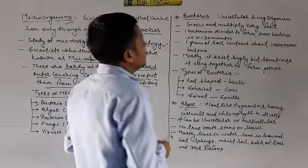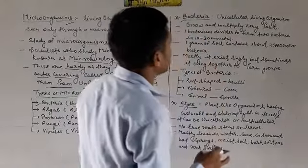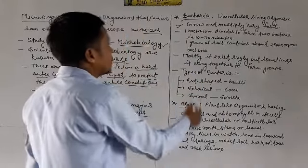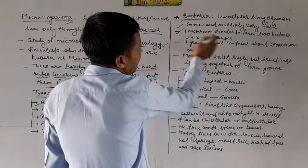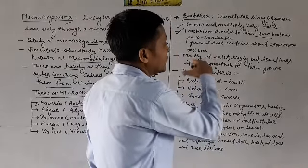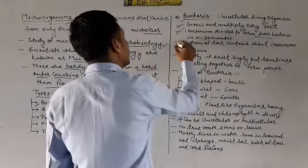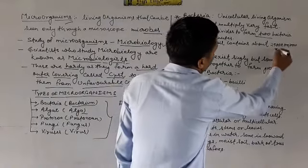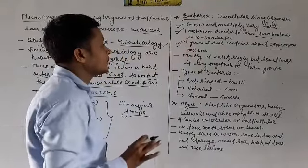Let's start with bacteria. Bacteria is a unicellular living organism that grows and multiplies very fast. One bacterium divides to form two bacteria within 10 to 30 minutes. If we observe one gram of soil, it contains about 25,000 lakh bacteria — that's an approximation, not an exact count.